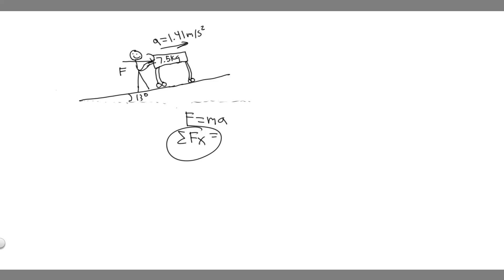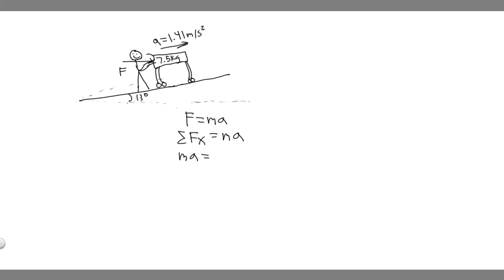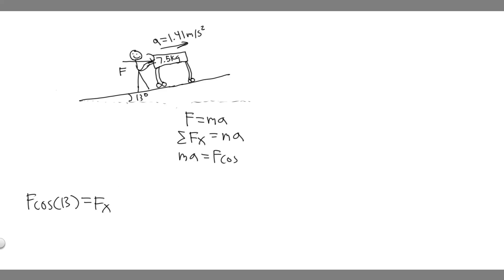So we take the sum of the forces in the x, and we know that equals mass times acceleration. Now, what are the forces in the x direction? We have the applied force F, but keep in mind this force is horizontal, so we need the component along the incline. That component is F times cosine of 13. Since it's going up the incline, we say it's positive.